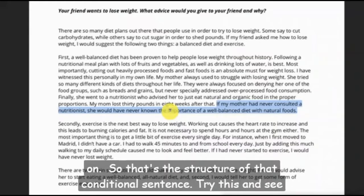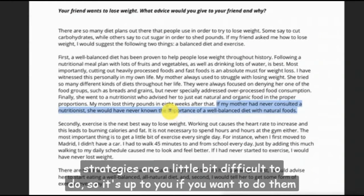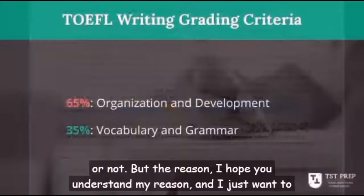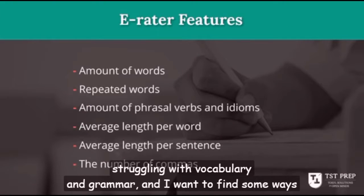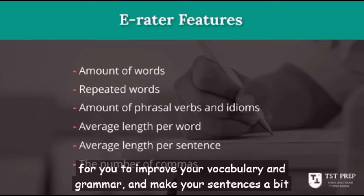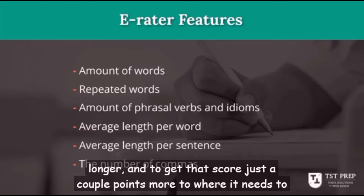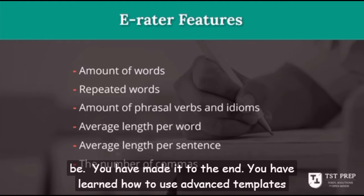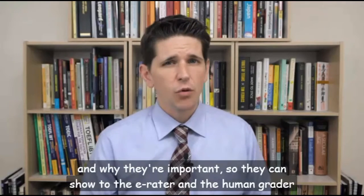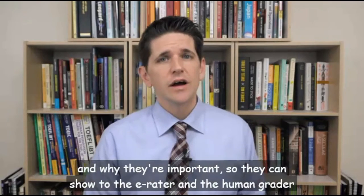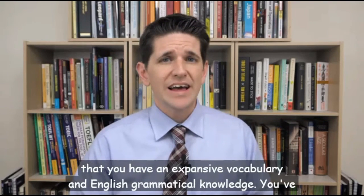Try these strategies and see how they work — I know they're a little difficult. I hope you understand the reason behind them. Going back to the grading criteria: you're probably struggling with vocabulary and grammar, and these strategies help find ways to improve your vocabulary and grammar, make your sentences longer, and get your score just a couple points more to where it needs to be. You have learned how to use advanced templates and why they're important — to show the e-rater and human grader that you have an expansive vocabulary and English grammatical knowledge.